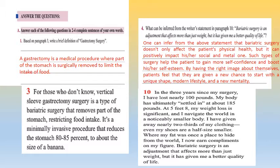Now, moving on to the questions. Answer each of the following in two to four complete sentences. Based on paragraph 3, write a brief definition of gastrectomy: a gastrectomy is a medical procedure where part of the stomach is surgically removed to limit the intake of food. What can be inferred from the writer's statement in paragraph 10 — 'Bariatric surgery is an adjustment that affects more than just weight, but it has given me a better quality of life'? We can infer that bariatric surgery doesn't only affect the patient's physical health, but can positively impact their social and mental wellbeing — such as improved self-esteem and a new lifestyle.